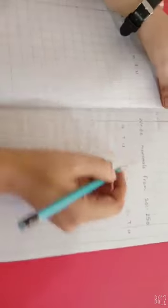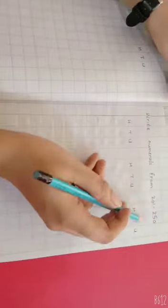First we write date 16 June 2020. Write numerals from 201 to 250.